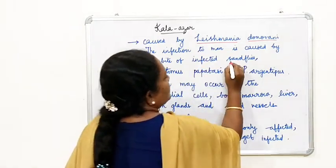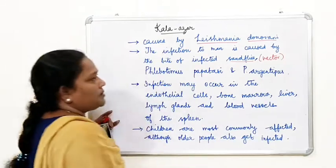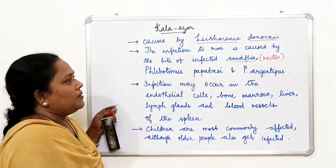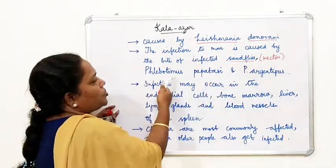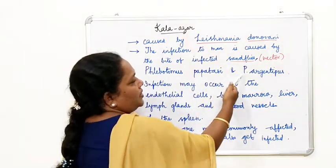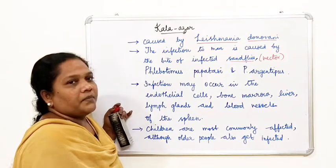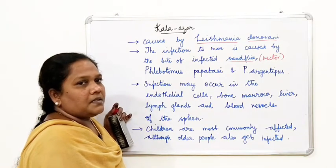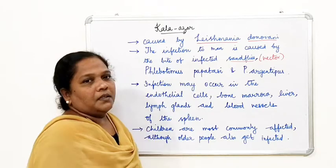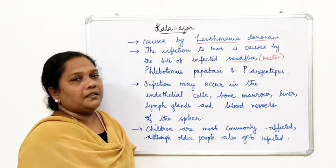The sand fly acts as a vector — the carrier which transmits the pathogen. The vector species are Phlebotomus papatasi and Phlebotomus argentipes. These are the two species or vectors that transmit the protozoan Leishmania donovani.